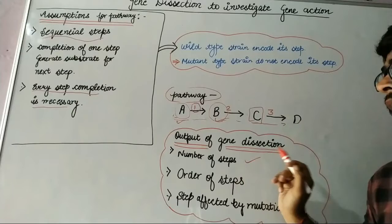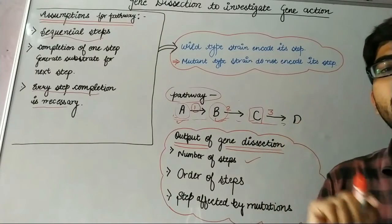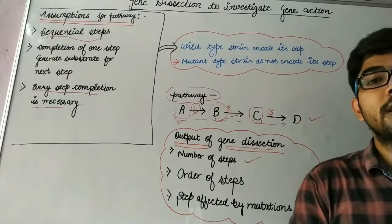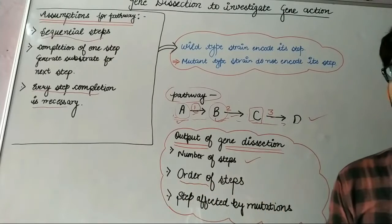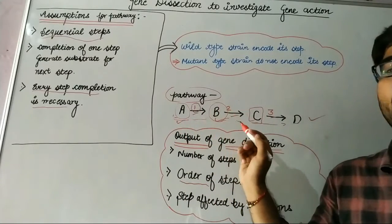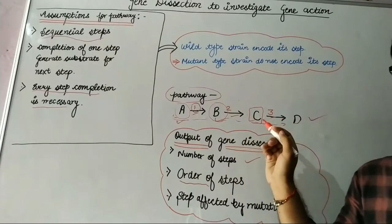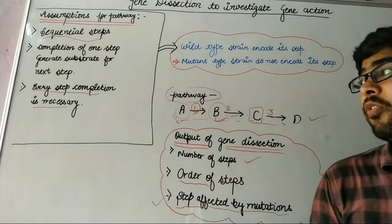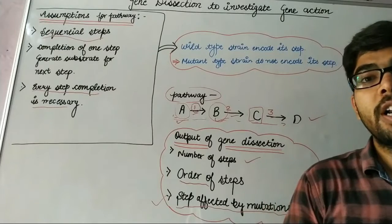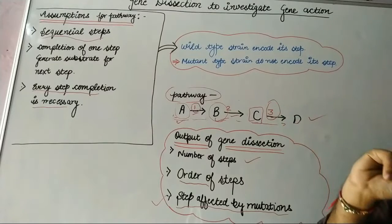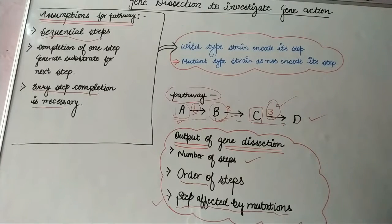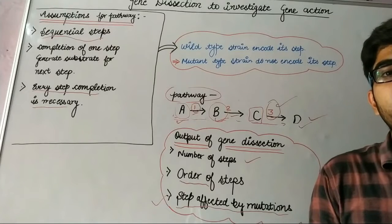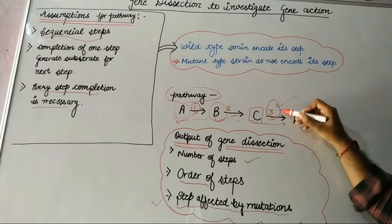We can determine how many steps occur in the biosynthetic pathway — for example, three steps: first, second, and third. We can also determine the order of the steps, such as whether conversion of A into B occurs before B into C. The third output is identifying which step is affected by a mutation. For example, when mutation occurs in step 3, there is no conversion of C into D. If we add D to the media and there is growth, this confirms the mutation is in step 3.